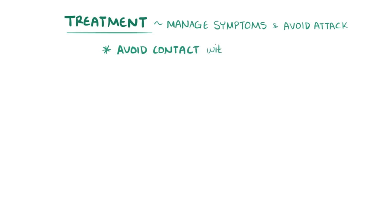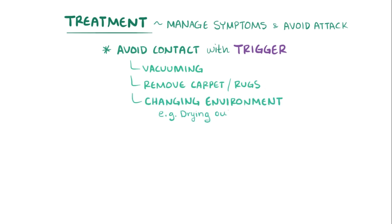While there's no cure for asthma, there are treatments available that can help manage the symptoms and prevent the development of an asthma attack. First, people with asthma should avoid or minimize contact with triggering substances by vacuuming, removing carpets and rugs, and changing the environmental conditions, like for example drying out a room in the case of molds that grow well in moist areas.